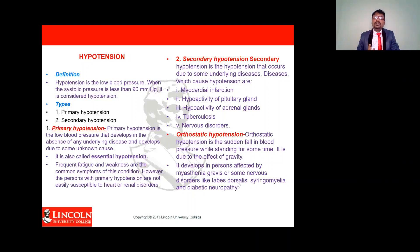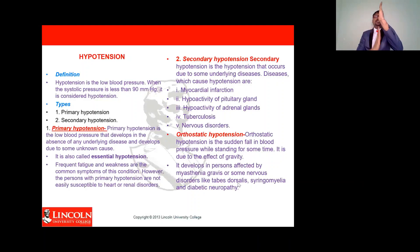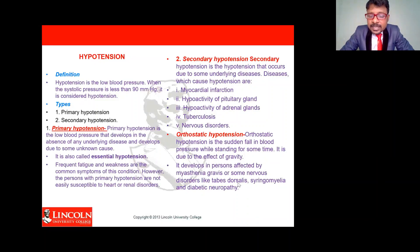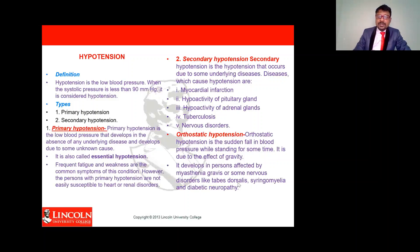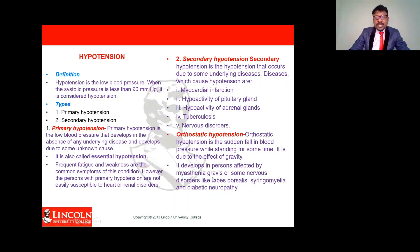When the person gets up, the blood has to pump against gravity. In the standing position, blood has to pump upwards, which is difficult, so blood circulation decreases. This condition is called orthostatic hypotension. It is most commonly seen in myasthenia gravis, neurological disorders with bedridden patients, tabes dorsalis, syringomyelia, and diabetic neuropathy.